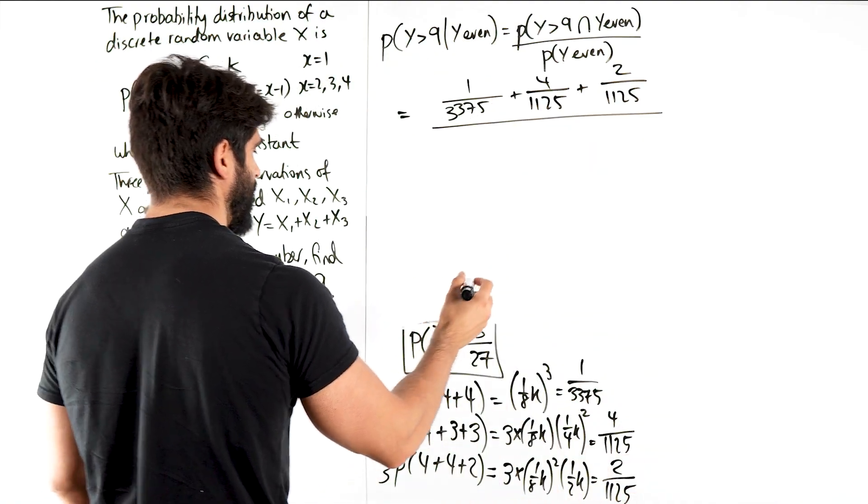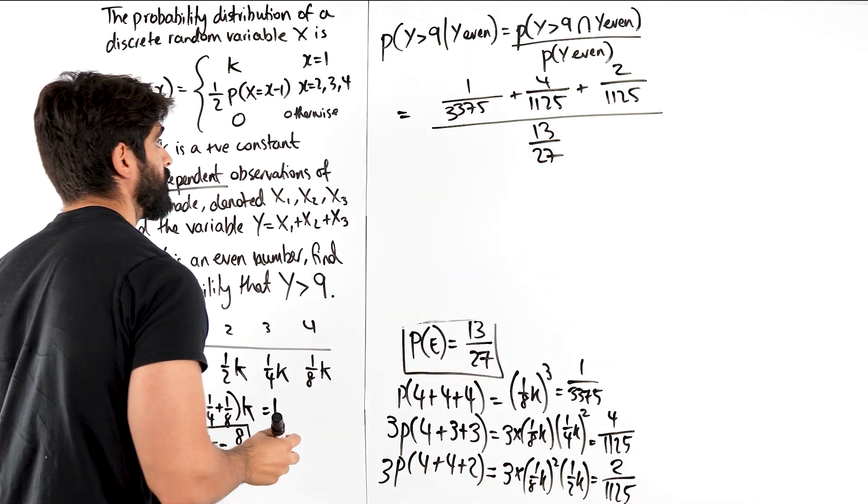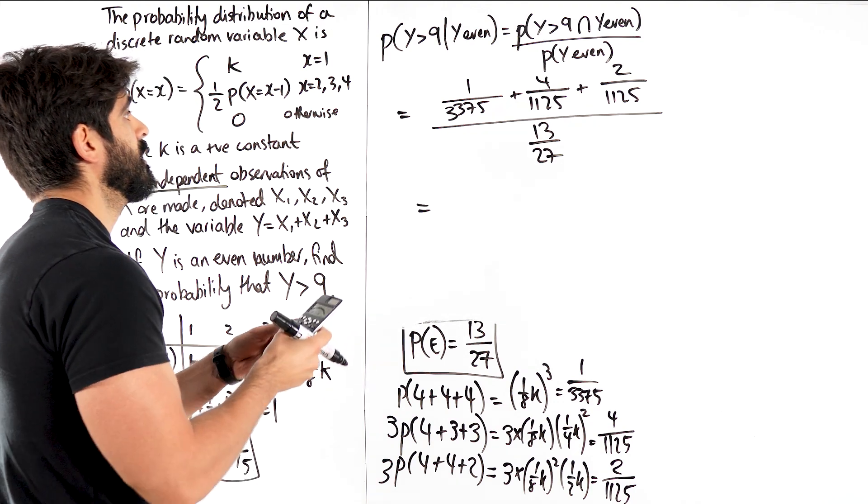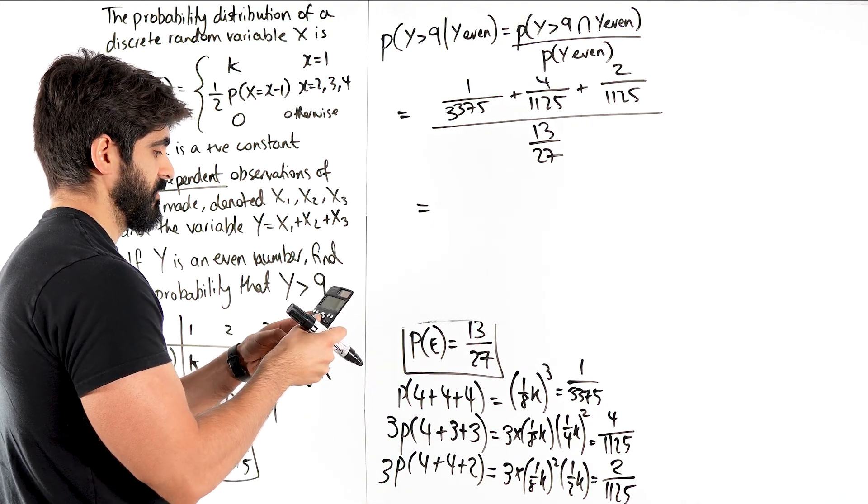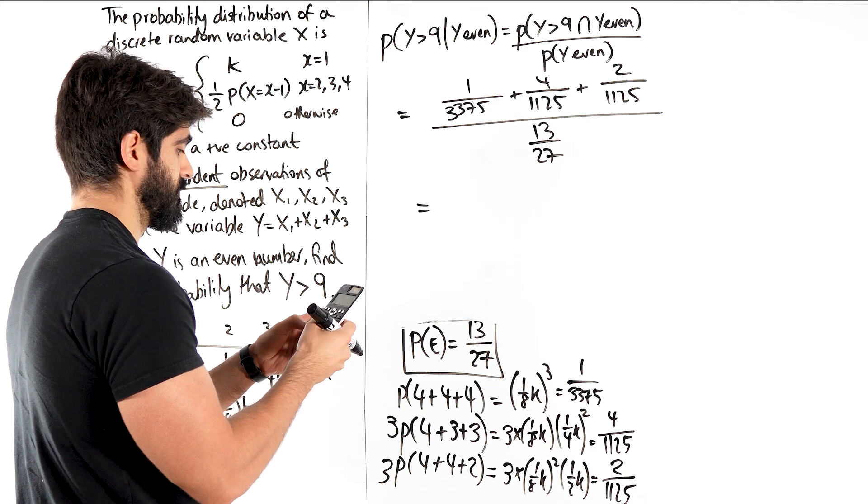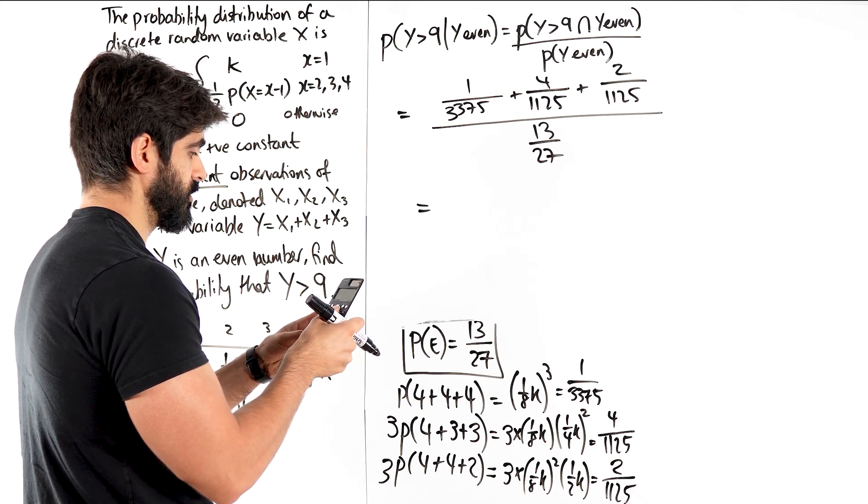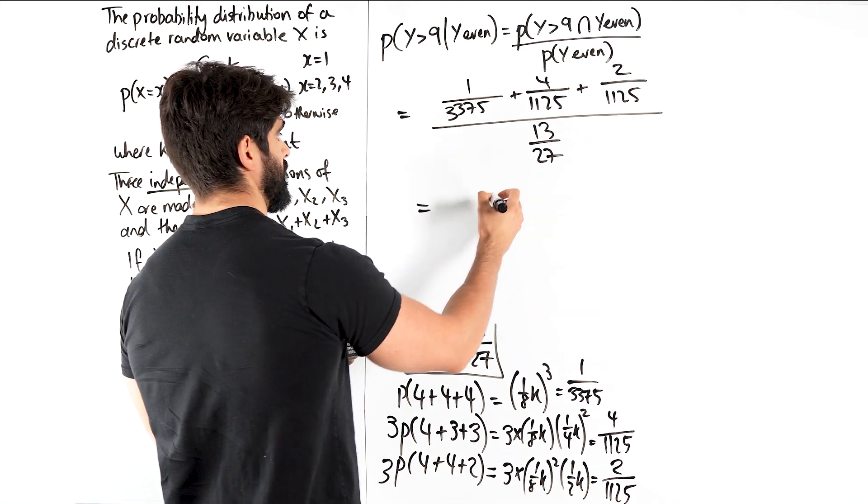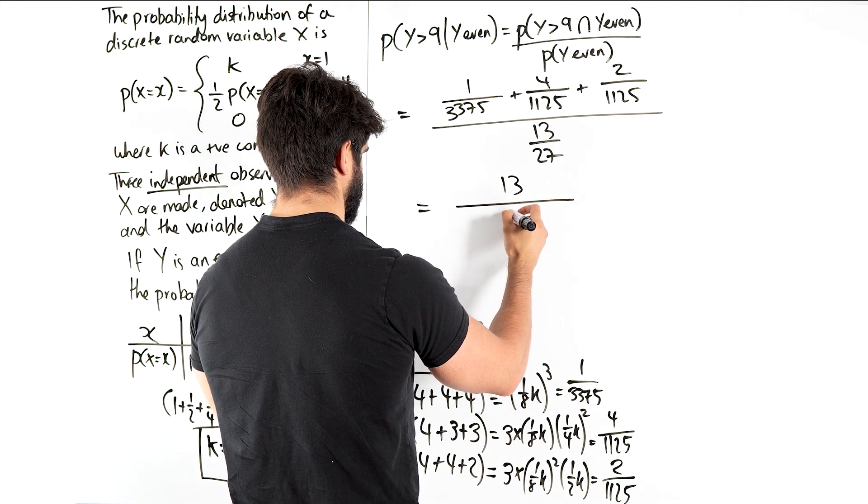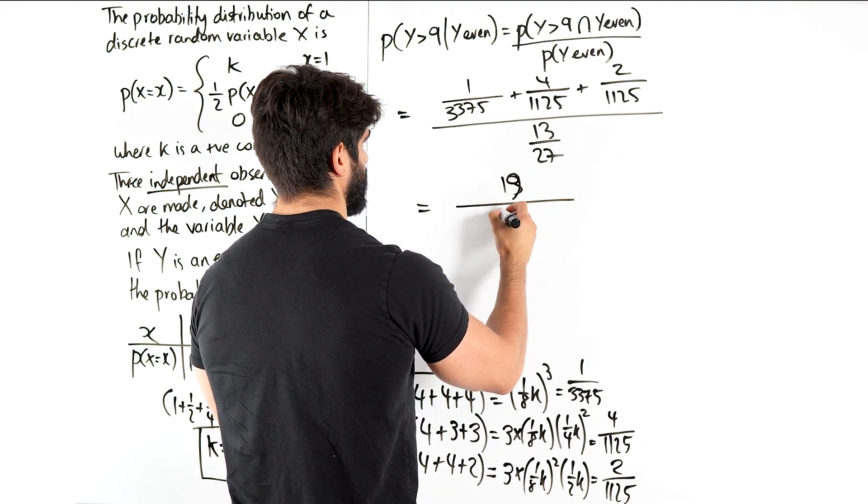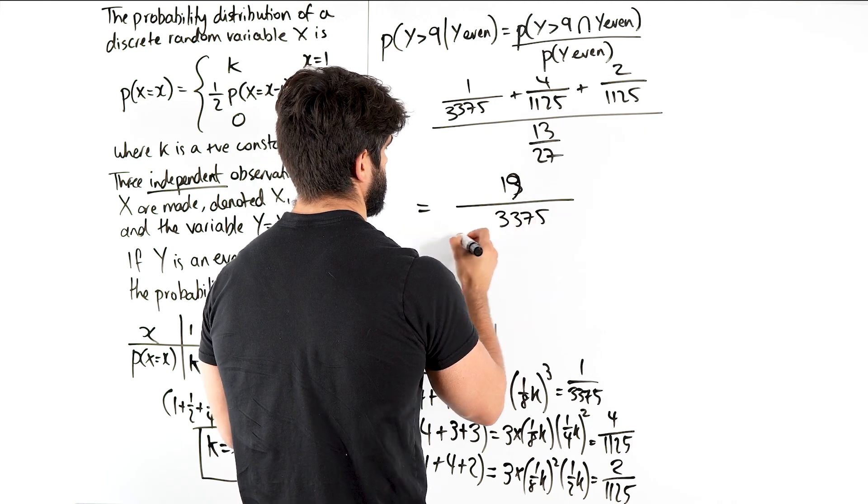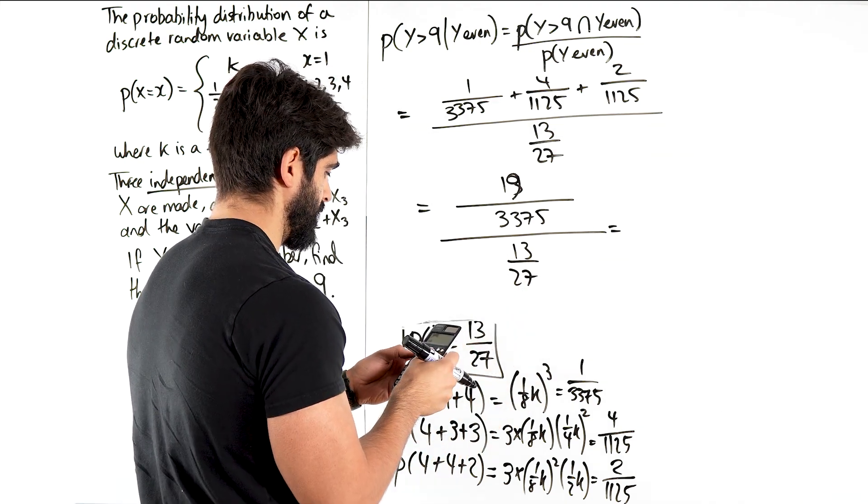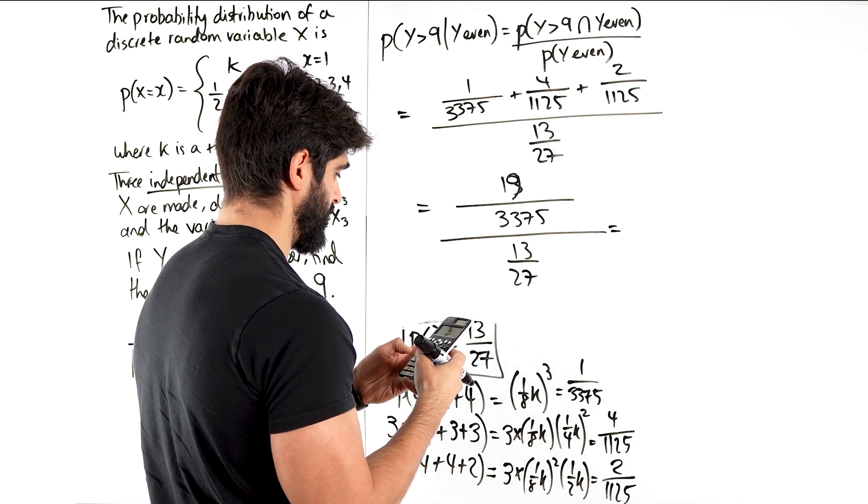Oh my God I nearly rubbed that out. Mate, that would have been an absolute catastrophe. Alright, what's that giving me? I'm just going to add these all up separately. 1 over 3375 plus 4 over 1125 plus 2 over 1125 is 13 over, wait no, it's 19. 19 over 3375 divided by 13 over 27.